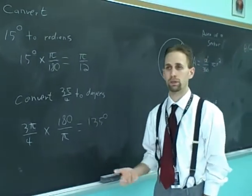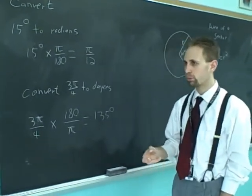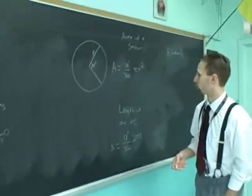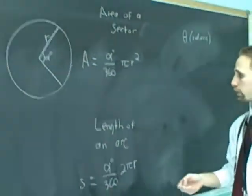What are some of the uses of radian measure? Some of the formulas from geometry simplify if you use radians as opposed to degrees. The most notable examples are the area of a sector and the length of an arc.